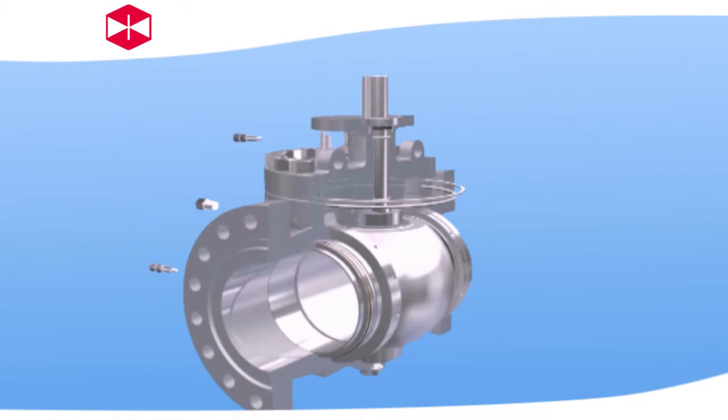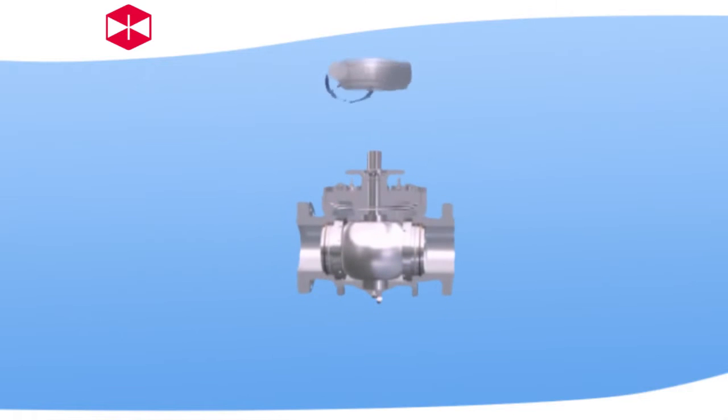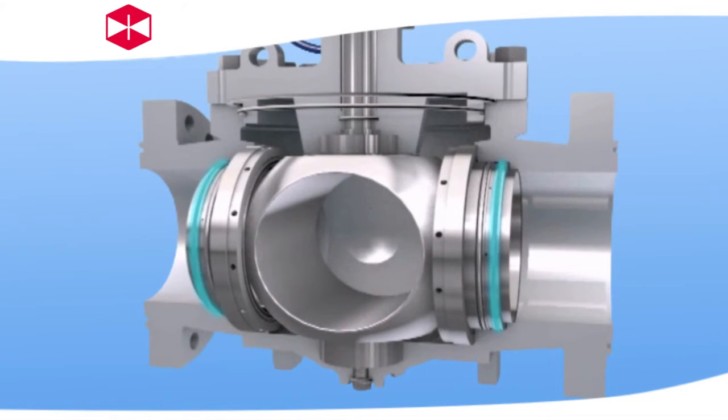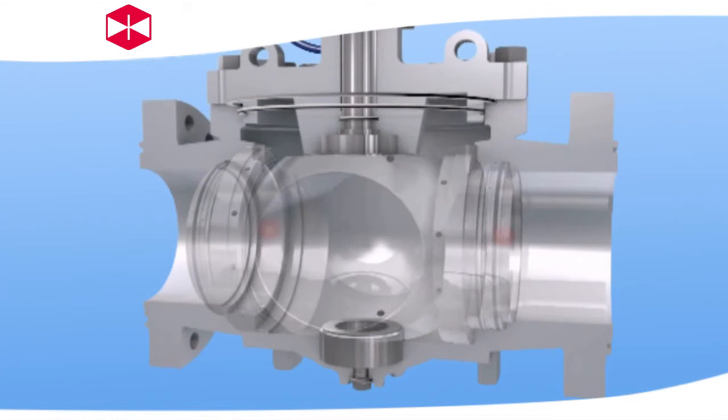Top entry ball valve is designed according to ISO 5211 standard. According to different needs of users, to use different actuator, the valve has DBB double block and relief function. In valve closed position through the valve cavity between initial sealing faces, the resistant pressure from both ends of the valve.